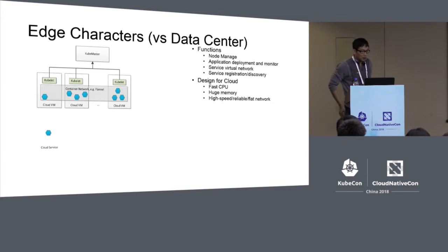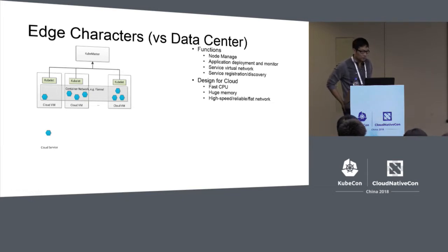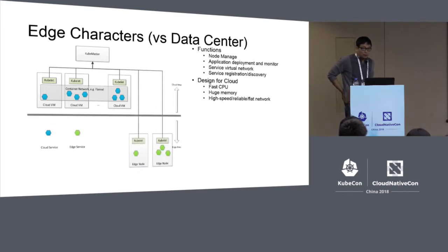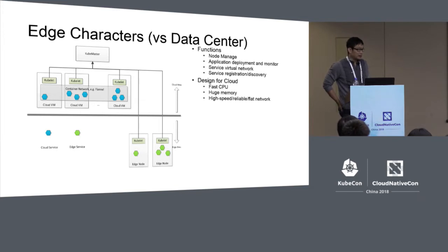On the left side is a simple Kubernetes architecture. It has a cloud master managing all cloud nodes and VMs. In each cloud VM, Kubernetes connects to the cloud master directly, and a container network links all services running across machines. One simple solution might be to register the edge node directly to the cloud master, so the master can deploy services to the edge. But this may not work.